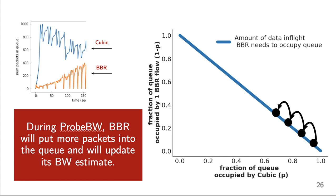We can also visualize this in another way here on the right. So on the x-axis here is Cubic's fraction of the queue, and on the y-axis is BBR's fraction of the queue. So if Cubic occupies p fraction of the queue, to occupy the rest of the queue, BBR must have about 1-p data in flight, right? Just the rest of the queue, which is illustrated here as the blue line. So if we start at the point where Cubic has most of the queue, as we see in this figure on the left, BBR is able to move up this blue line during probe bandwidth, updating its bottleneck bandwidth estimate, putting more and more packets into the queue as Cubic backs off.